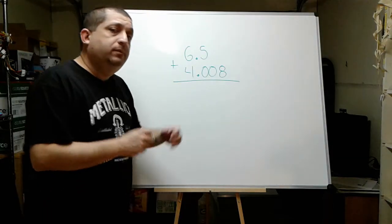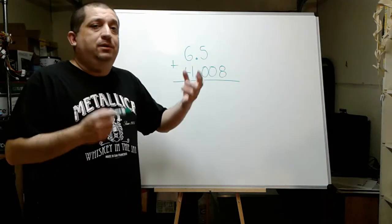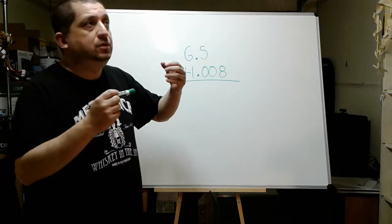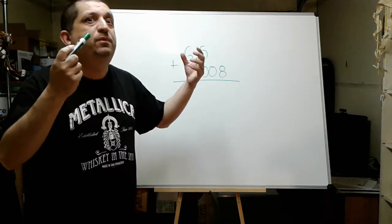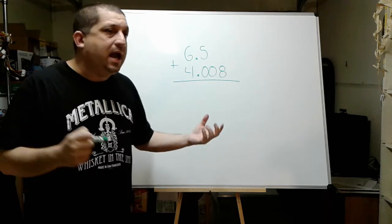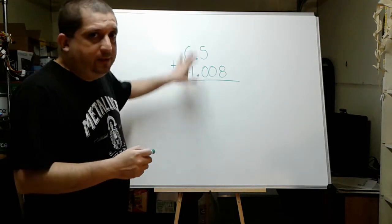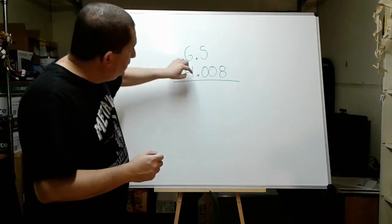Alright my friends, to do addition with decimal numbers is very easy. Actually, all we have to do is just perform the addition like we always have, almost ignoring the decimal period right here.